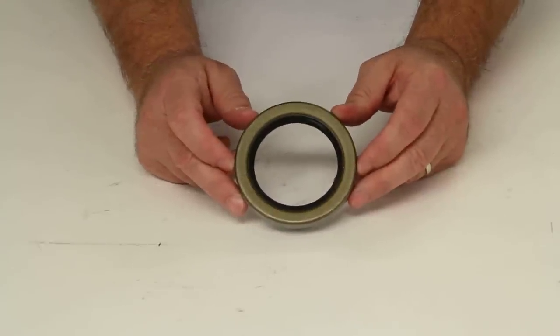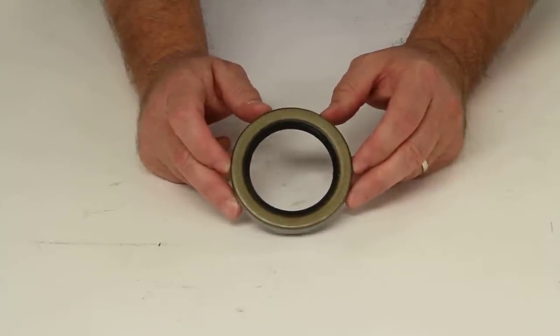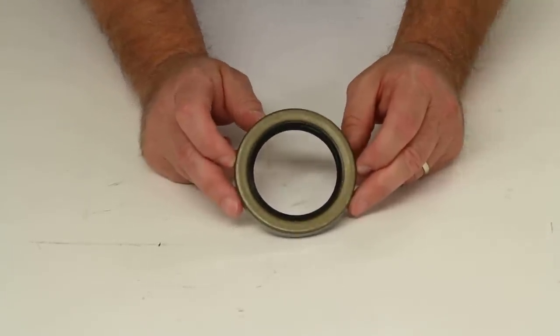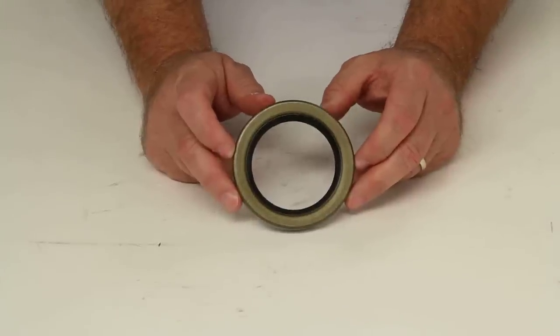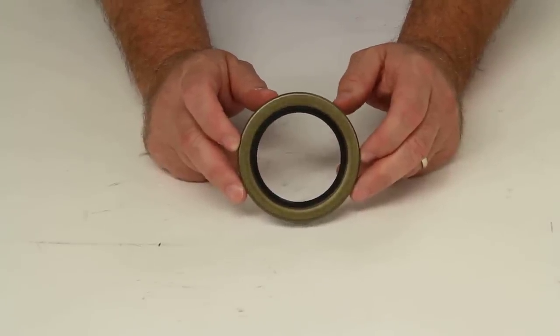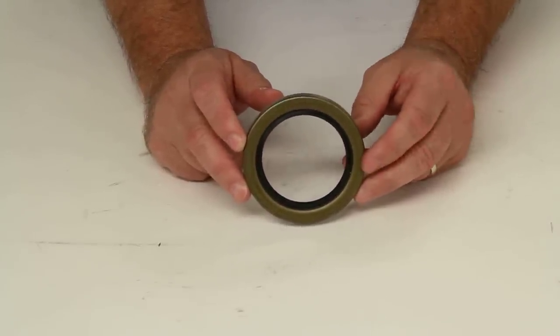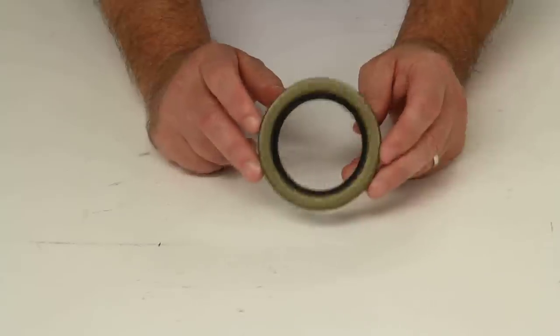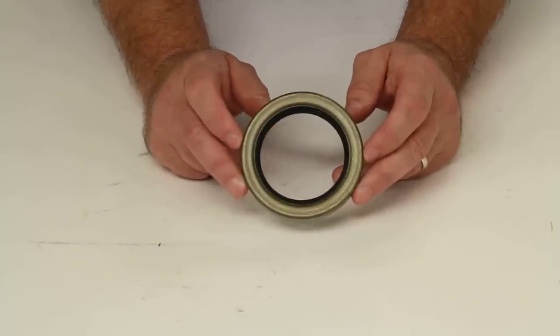If you go to the product page for this oil seal, you'll see a chart, and that chart will list the different manufacturers of oil seals and their part number, which will coincide with this oil seal.